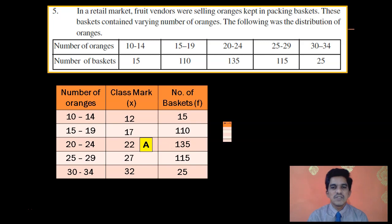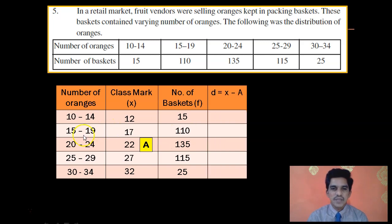Then, you have to calculate deviation which you will get by using x minus A. Here all the class marks are x values. From all the values of x, you have to subtract this 22. For example, you take 12. 12 minus 22 will give you minus 10. Then, you have 17 minus 22, you will have minus 5. 22 minus 22 gives 0. Then you have 27 minus 22, now you will have positive 5. And the last one, 32 minus 22, you will have 10.